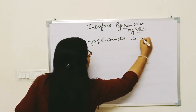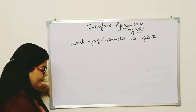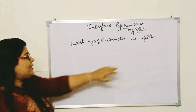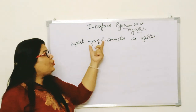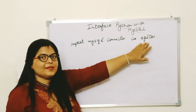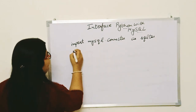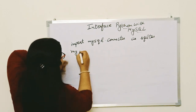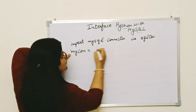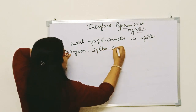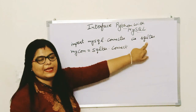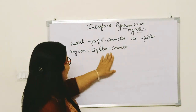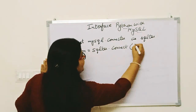Every time writing 'mysql.connector' is lengthy, so you use an alias — you write 'as sql', meaning wherever you want to use it, you just write 'sql'. So instead of writing mysql.connector.connect, you now write sql.connect, and inside the brackets you provide the host, user, password, and database.